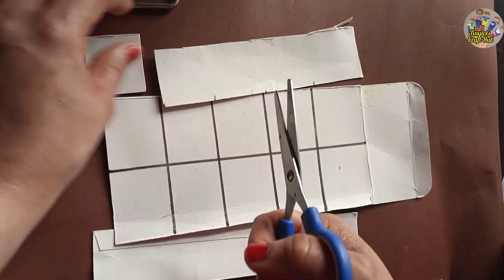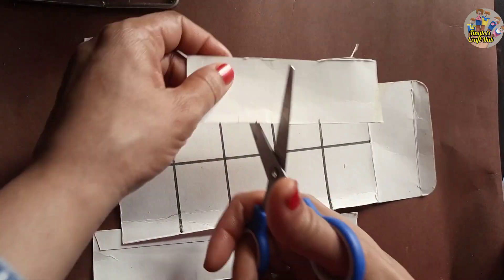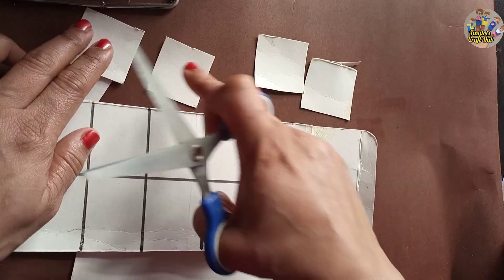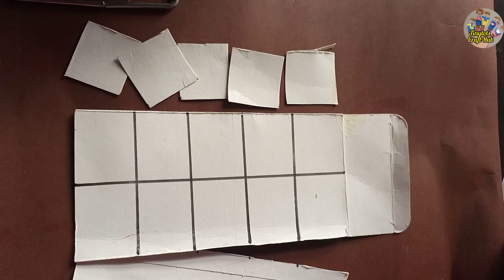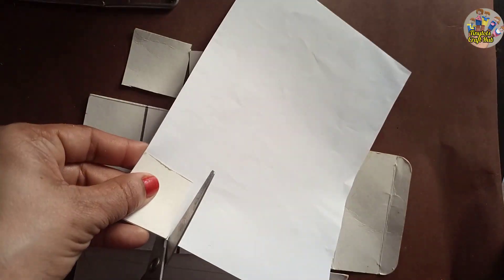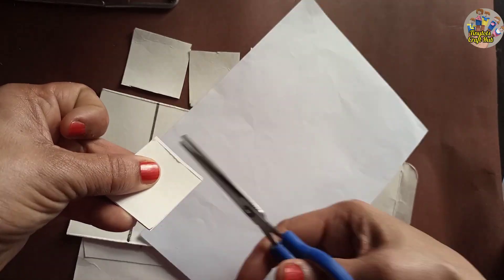You will need transparent tape, as I showed in the beginning of the video. Now we will attach these boxes with the help of tape because we will flip these portions.